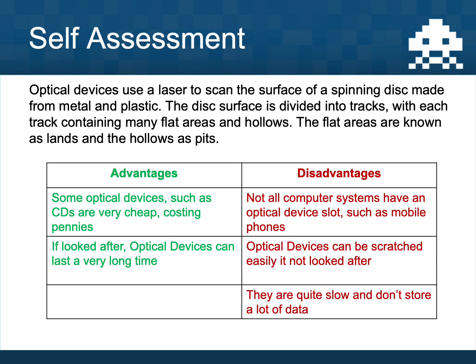They're also quite slow and don't store a huge amount of data. A CD can store about 700 megabytes, a DVD about four and a half gigabytes, and a Blu-ray up to about 50 gigabytes — which isn't a huge amount nowadays. They're fairly slow too. So definite advantages: very cheap and long-lasting if looked after. But a number of disadvantages, which is why we're seeing fewer optical devices, and things like expensive MacBook Pros don't come with a CD drive at all.